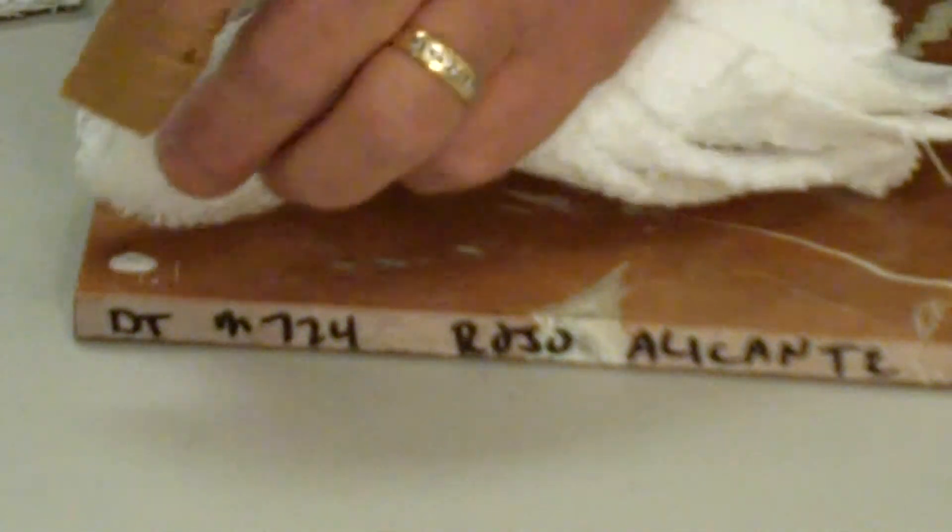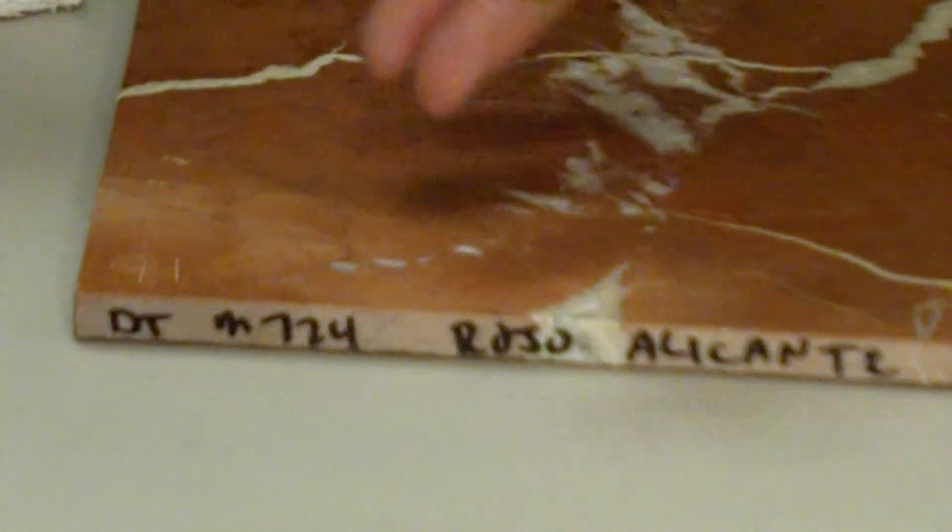Then I want to do an acid test. I'll take a small eyedropper of an acid-based product like our concrete tile and grout brightener and apply it directly to the surface. Be ready to wipe that surface off in case there's a reaction. See the white appearance there? That is a chemical reaction of the acid interacting with the calcium carbonate in this stone. It is very vital that we know that — we cannot use this product on this type of surface.